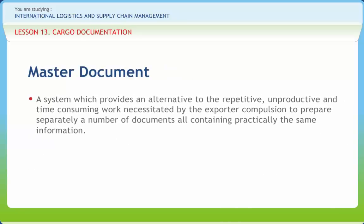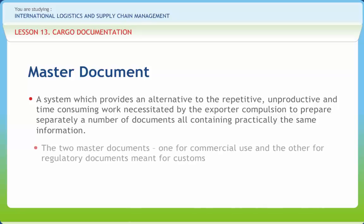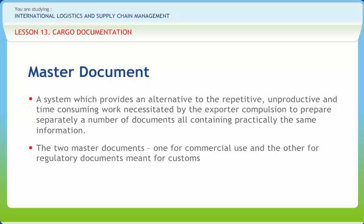A system which provides an alternative to the repetitive, unproductive and time-consuming work necessitated by the exporter's compulsion to prepare separately a number of documents all containing practically the same information — this system is known as the Aligned Documentation System. The two master documents, one for commercial use and the other for regulatory documents meant for Customs, RBI, and Port Trust, have maximum advantage of alignment and minimum cost and time for preparing individual documents. The two master documents contain all the information that was common to individual documents.